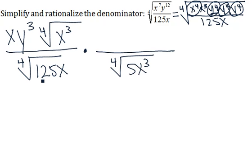When we do that, we'll have 125 times 5, which is 625, and the fourth root of that is 5. And we'll have an x and an x cubed, which gives us x to the fourth.